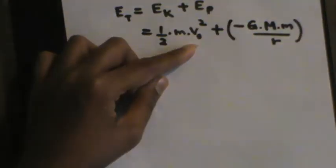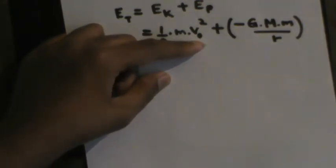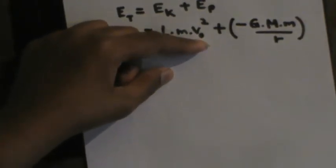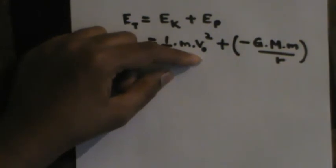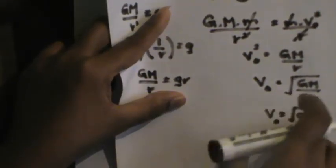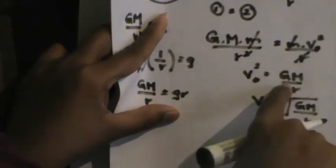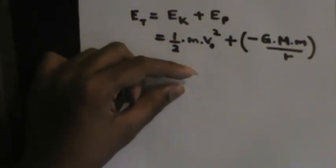We can simplify this. How? We found the value of V₀ in the previous video: V₀ equals root of GM divided by R. So V₀ squared equals GM divided by R. Substituting, the kinetic energy term becomes half times m times GM over R. So the total energy becomes half times m times GM over R, minus G times capital M times simple m divided by R.